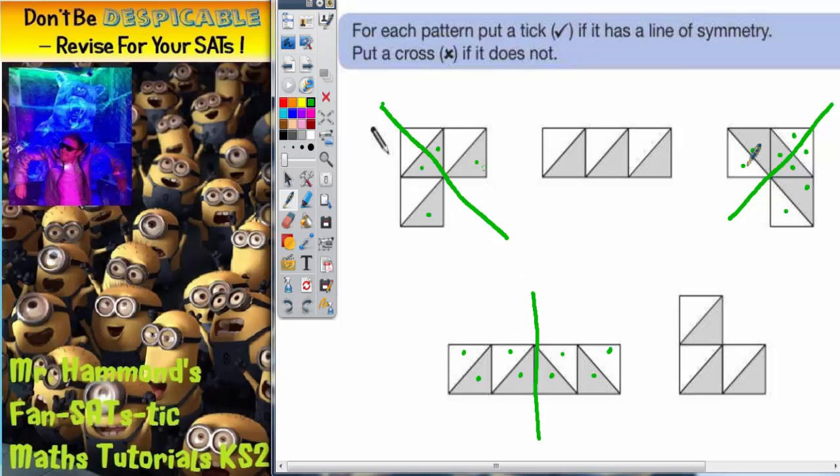So there we have it. They are the three lines of symmetry that we are looking at. So we need to tick that one, tick that one, and tick that one. And we need to cross that one, and cross that one. And that's your answer. But you should check your answer with a mirror.